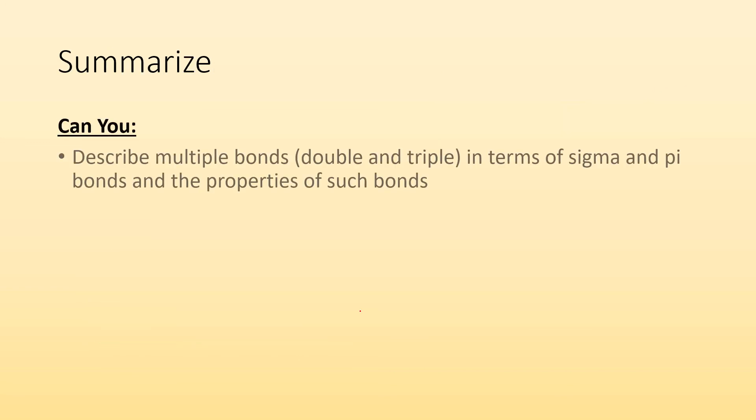All right, so to summarize: can you describe multiple bonds — meaning double and triple bonds — in terms of sigma and pi bonds and the properties of such bonds? I hope so.